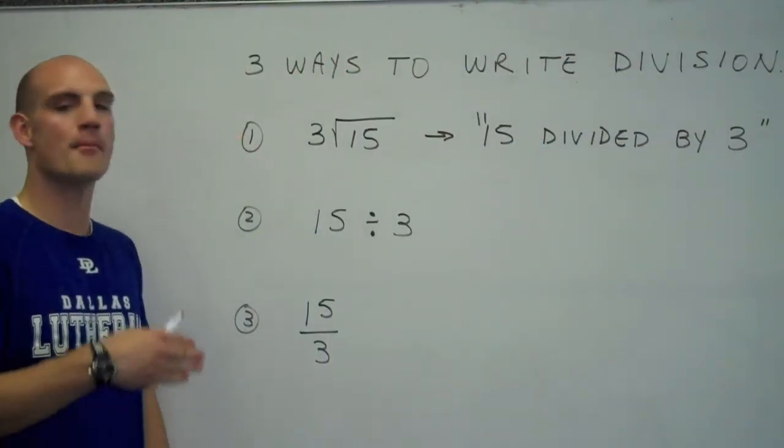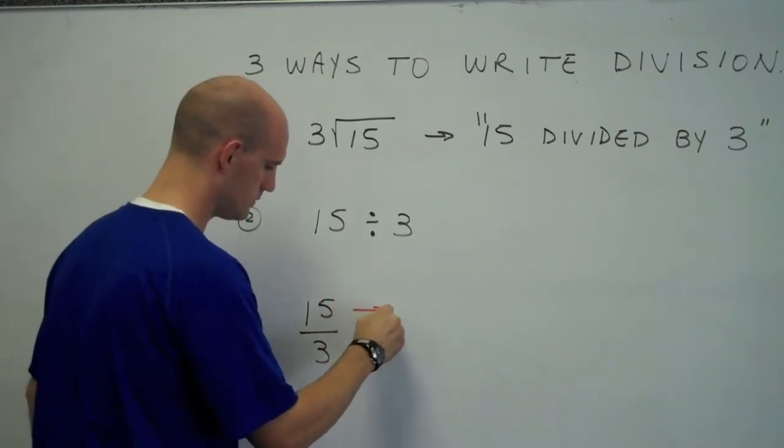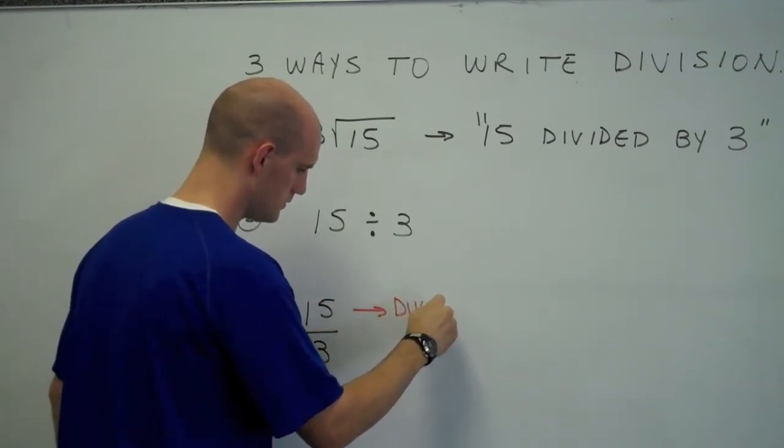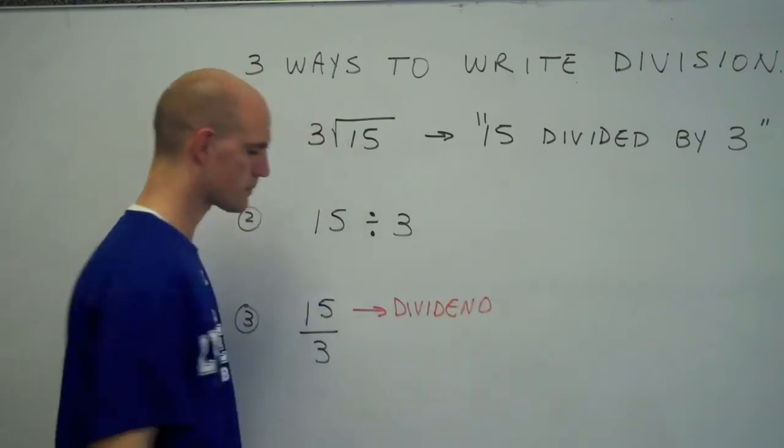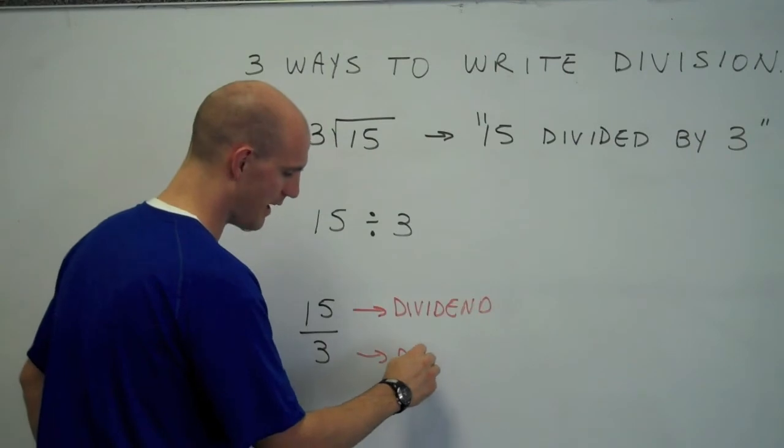What we are dividing, the number that's being divided, is called the dividend. The number that we're dividing by is called the divisor.